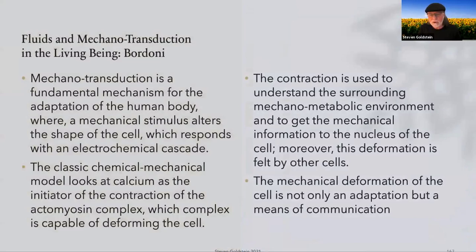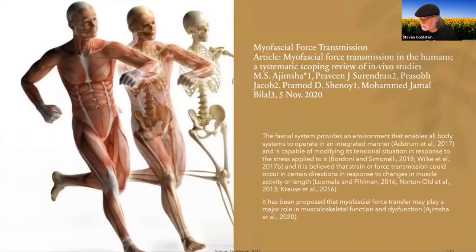In his article, 'Fluids and the Mechanical Transduction in the Living Being,' mechanical transduction is the mechanism for the adaptation of the human body where a mechanical stimulus alters the shape of the cell, which responds with an electrochemical cascade. The fascial system provides an environment that enables all the body systems to operate in an integrated manner.